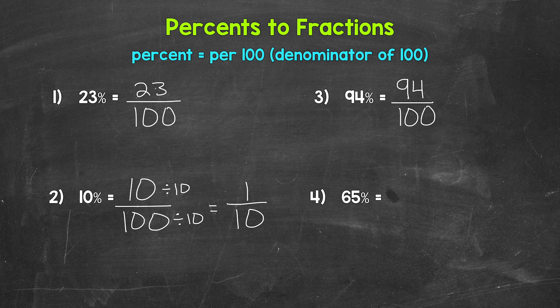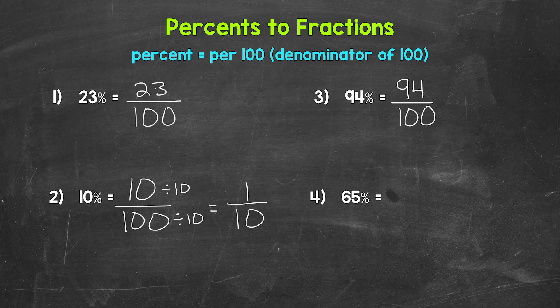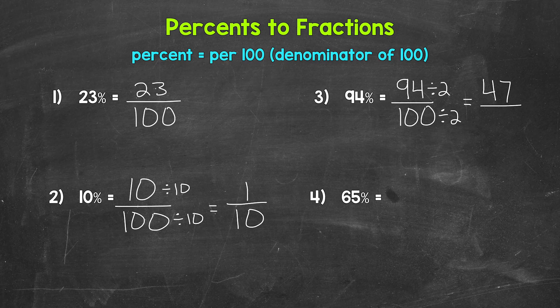We have a greatest common factor of two that we can divide the numerator and denominator by in order to simplify. 94 divided by two, that's 47. And then 100 divided by two is 50. So we get 47 over 50, 47 fiftieths. The only common factor between 47 and 50 is one. So we are done.